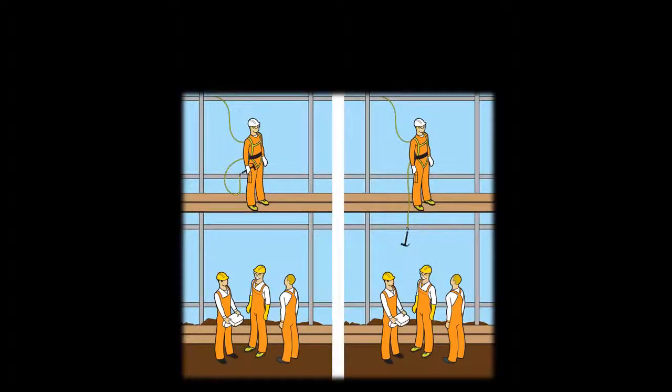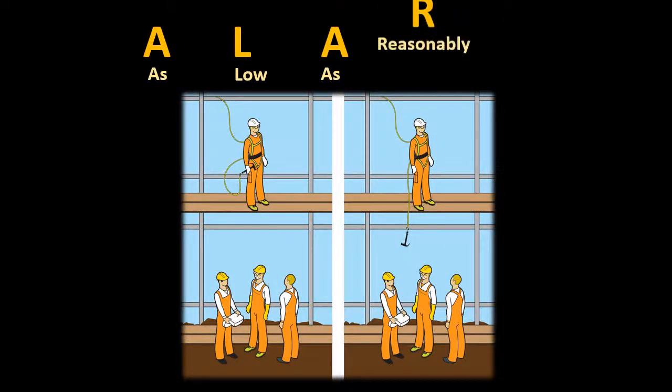When working at heights, it might be required that workers tether their tools to themselves in order to prevent them from falling on workers below. However, it's still reasonable to enforce a policy of wearing hardhats. When all reasonable control measures have been put in place, the risk is said to be ALARP — as low as reasonably possible.